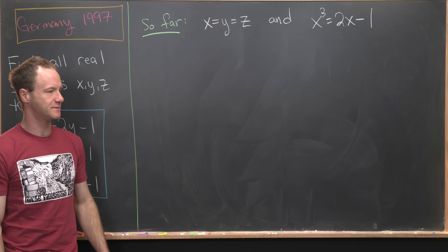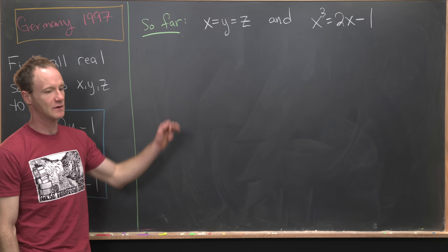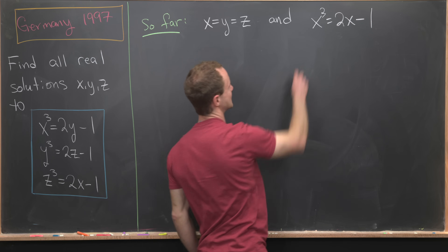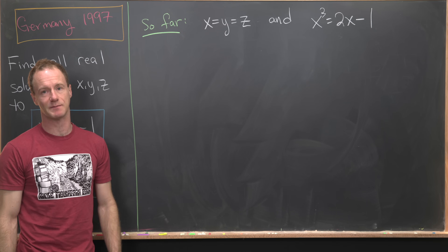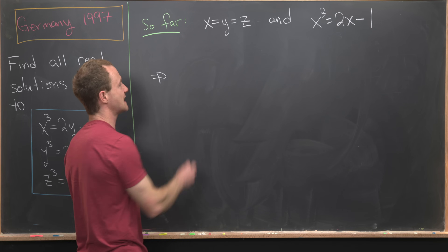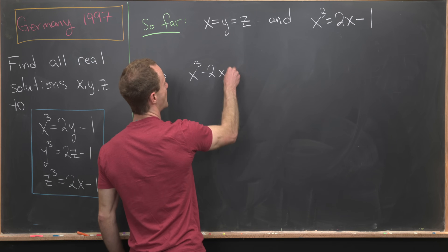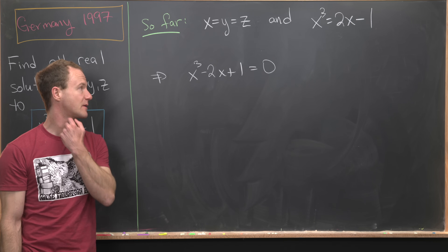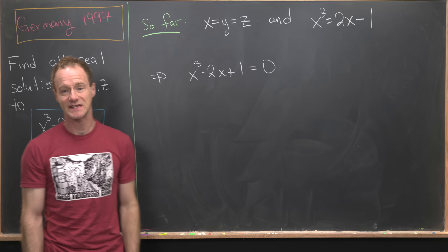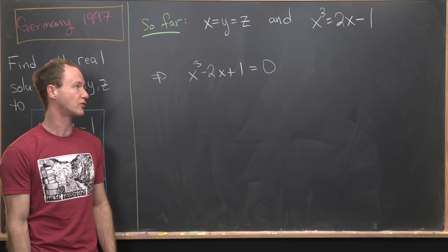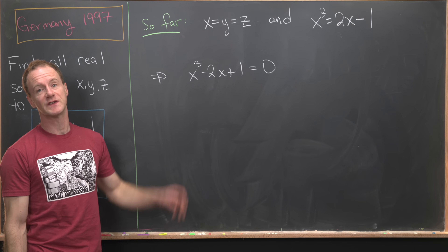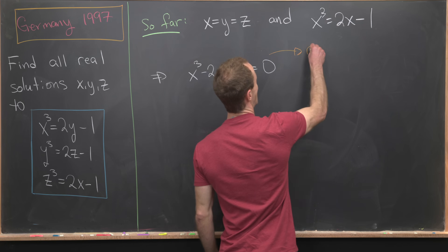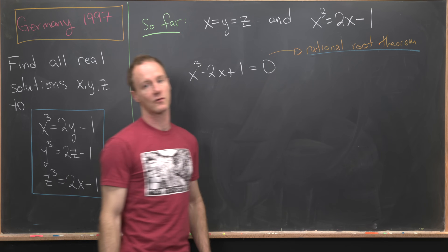So far we used symmetry to show that x must equal y must equal z for any solution to this system. That means each variable satisfies the cubic equation x cubed equals 2x minus 1. So we need to find the roots of the cubic polynomial x cubed minus 2x plus 1 equals 0. Finding roots of a cubic is generally hard, but since this is a math contest, one root should be easy to find — probably via the rational root theorem.